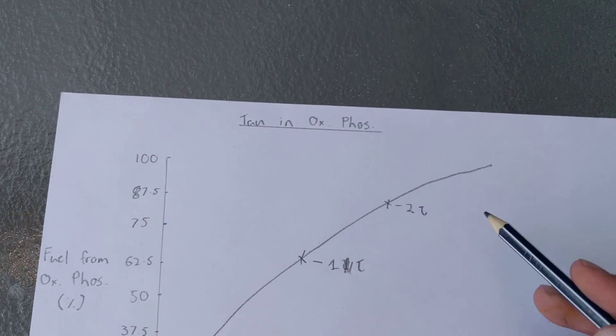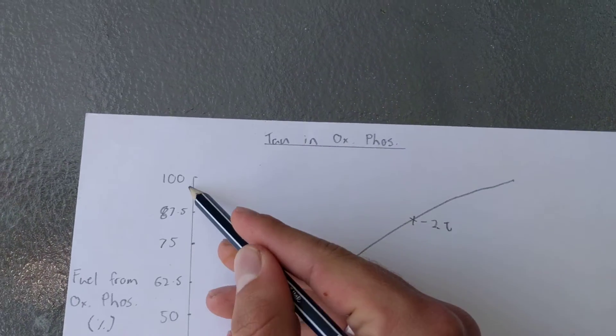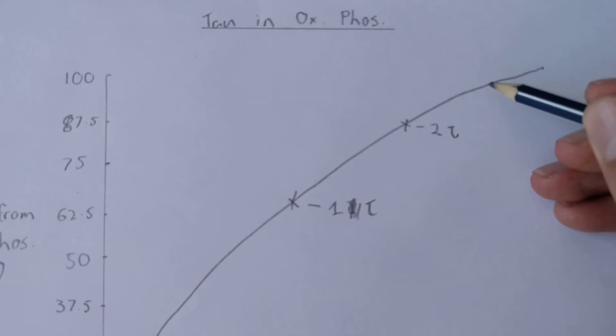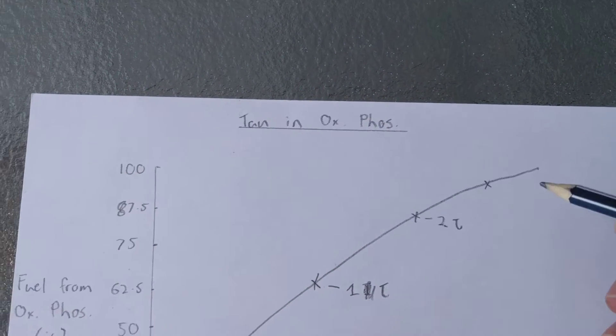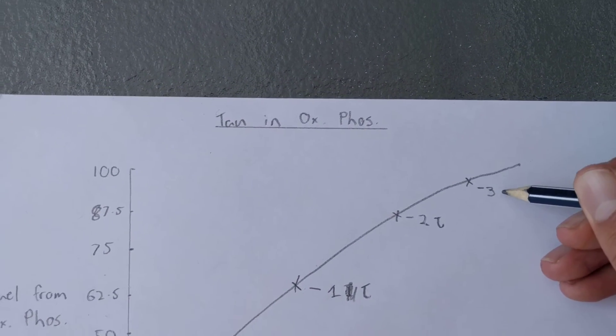Then we go 63% of that line, which is 94.9, which is about there, and that is three tau.